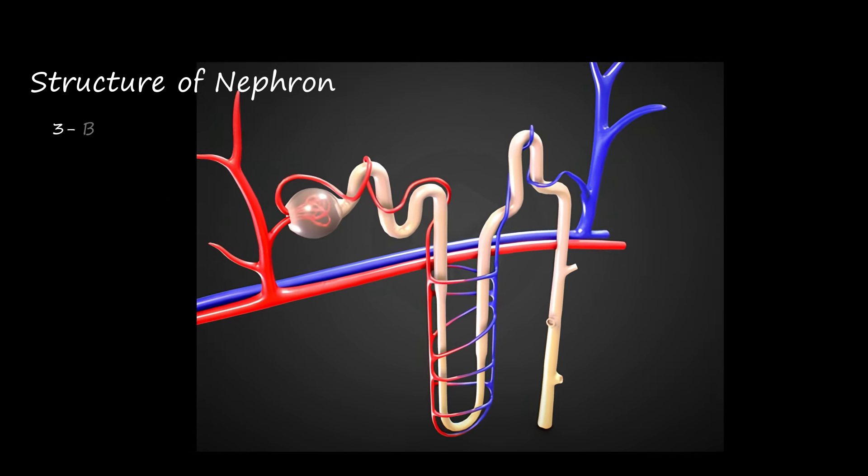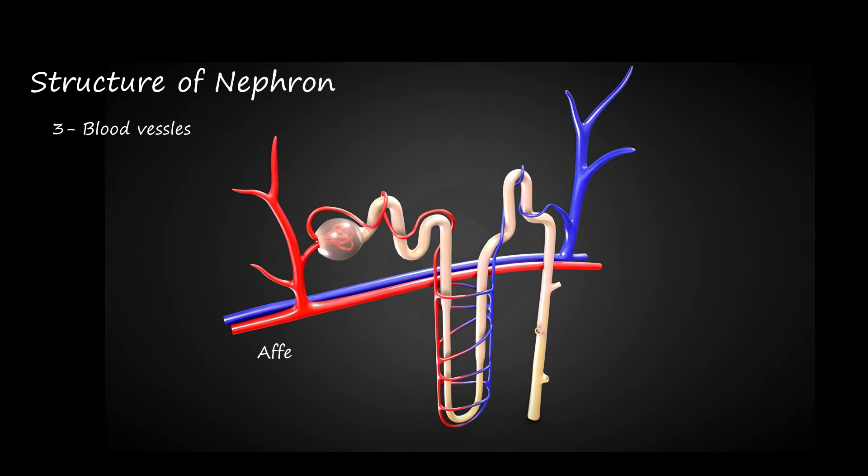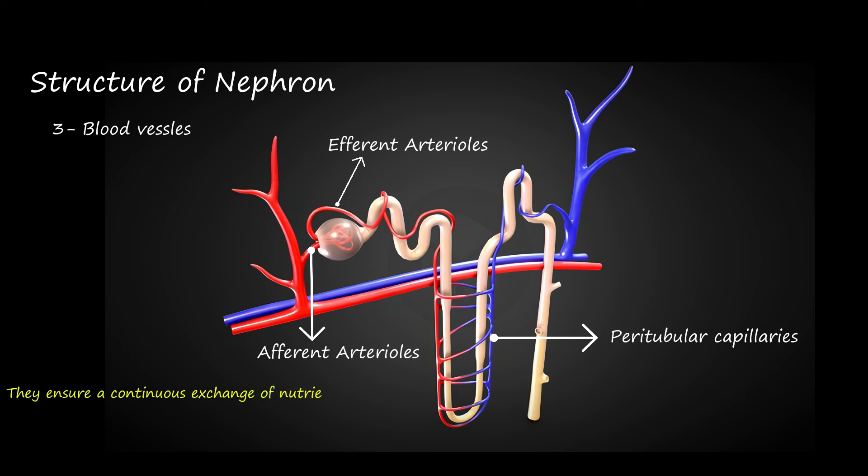Finally, we have the blood vessels, including afferent arterioles, efferent arterioles, and peritubular capillaries. They ensure a continuous exchange of nutrients and waste products, providing essential support to the nephron.